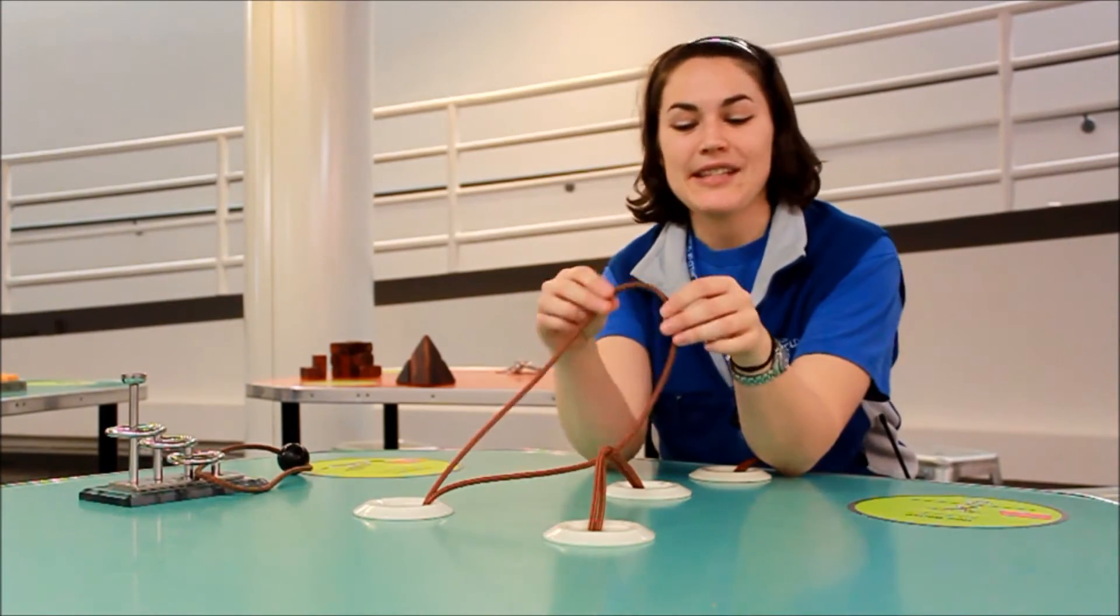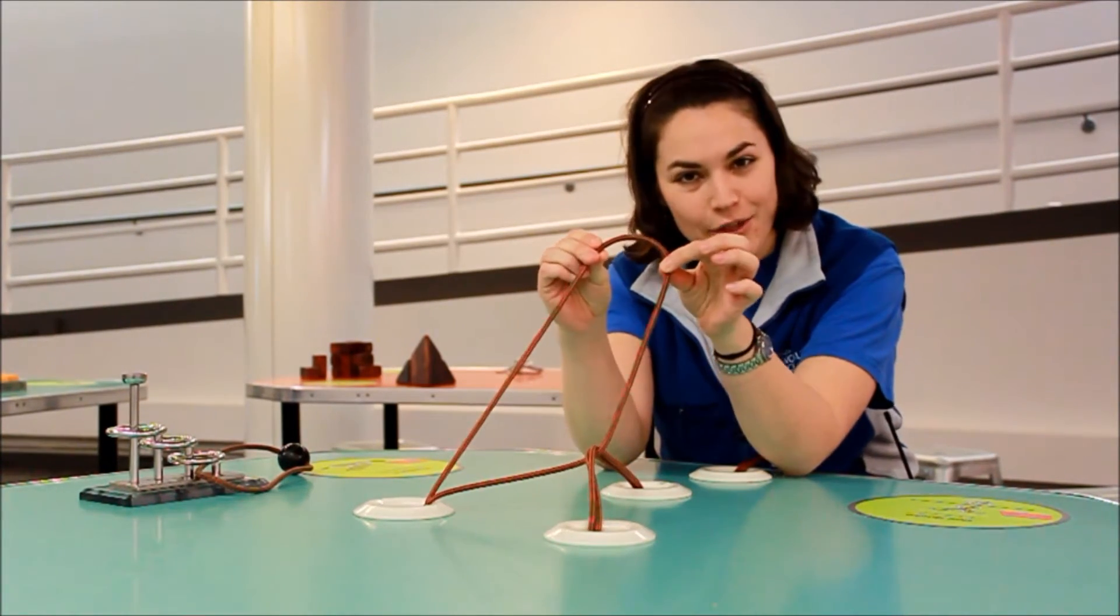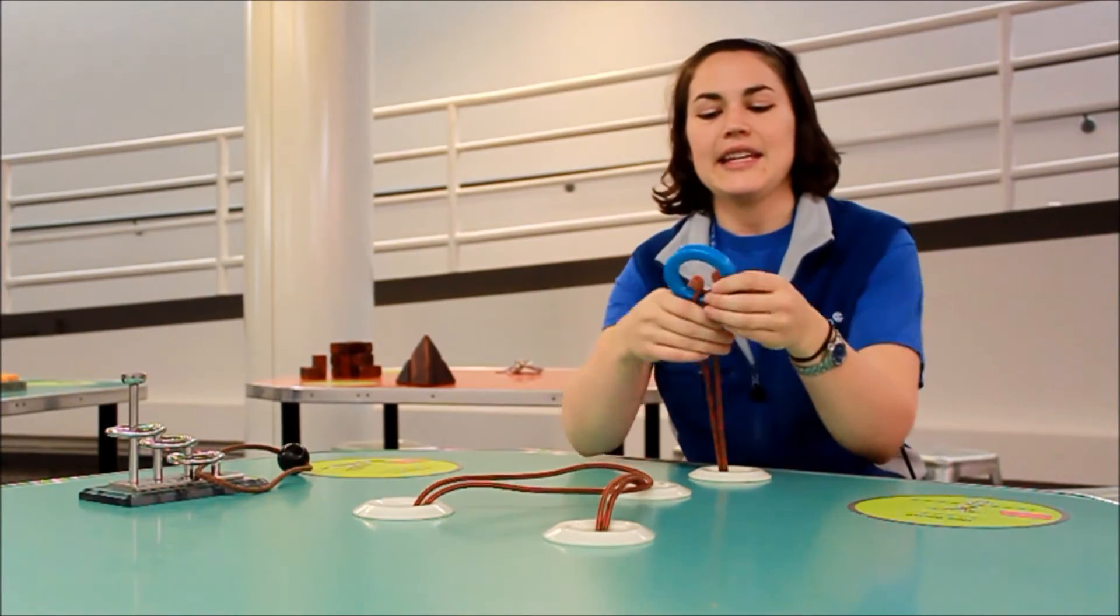Now this one here, the trick with this is to discover the loop. So you find the loop and then you want to follow that through. You'll notice that the end here is a ring.